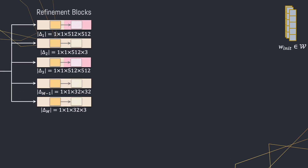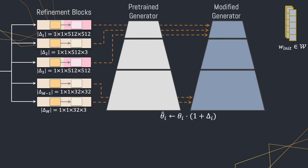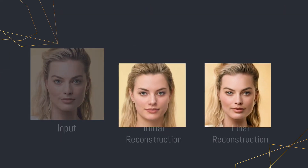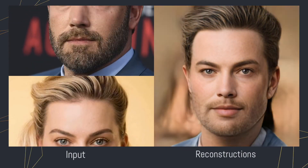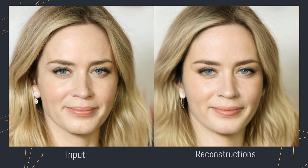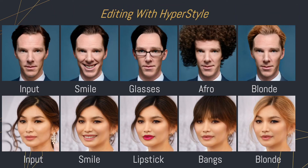Putting everything together: we take the outputs of our refinement blocks, update the pre-trained StyleGAN generator using our update rule, and obtain the modified generator. When we pass the W latent code corresponding to the initial reconstruction, we get the improved reconstruction shown here on the bottom. This additional freedom leads to higher fidelity reconstructions, visible in these animations generated by interpolating latent codes and weight offsets returned for each input image. And since we don't change the original latent space, we can apply standard editing techniques even with our new generator by simply applying them to our initial W code.